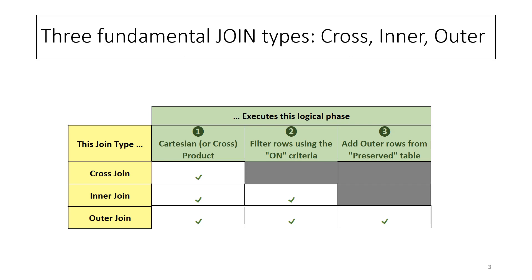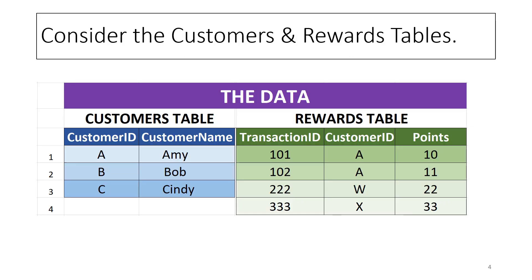I'll explain each of these using examples, using two simple tables. Let's take a look at the data. The customers table has two columns: customer ID and customer name. It has three customers with IDs A, B, and C — Amy, Bob, and Cindy.